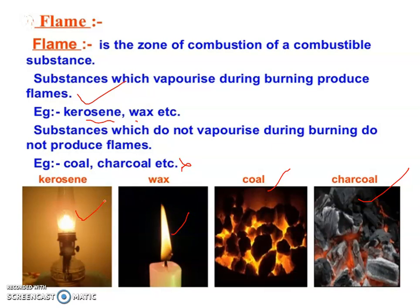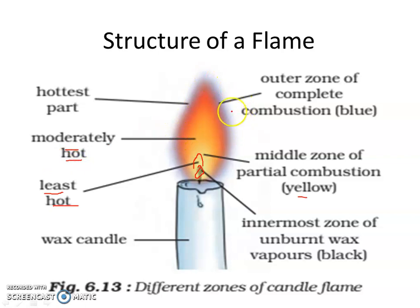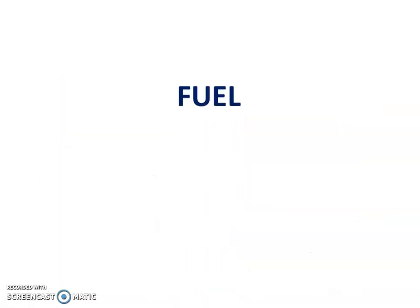Now, the structure of flame. If you see the flame, the innermost part is the least hot and appears black. The middle part is yellow with moderate heat. The outer part is blue in color and is the hottest part of the flame. This is the structure of flame. Thank you very much.